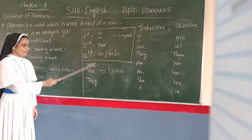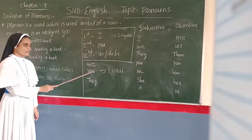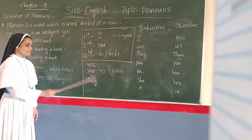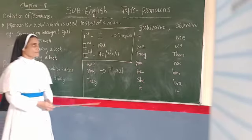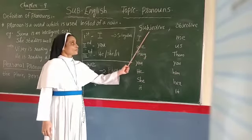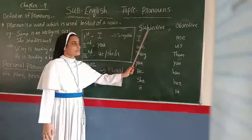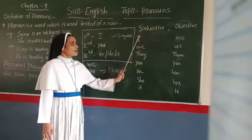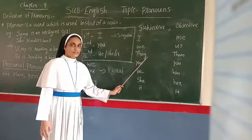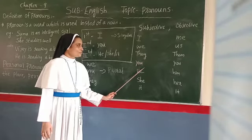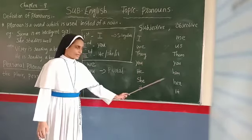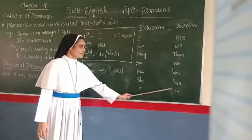The plural of 'I' is 'we.' For 'you,' there is no change. He, she — the plural is 'they.' Now you will see subjective and objective pronouns. Subjective pronouns change into objective pronouns: 'I' changes into 'me,' 'we' changes into 'us,' 'they' changes into 'them.' 'You' — there is no change. 'He' changes into 'him,' 'she' changes into 'her.'